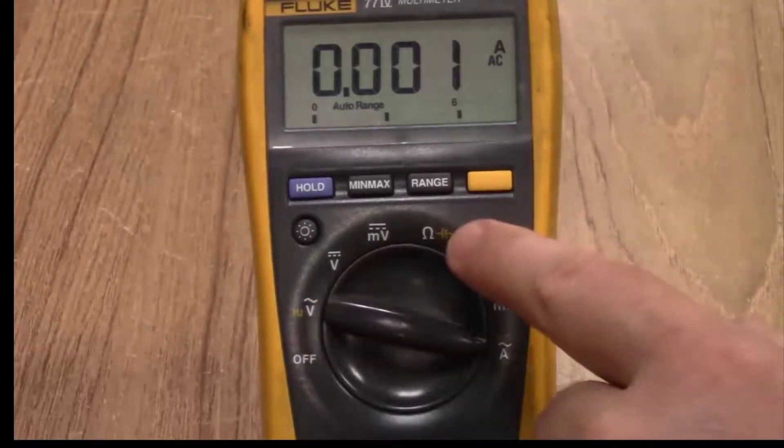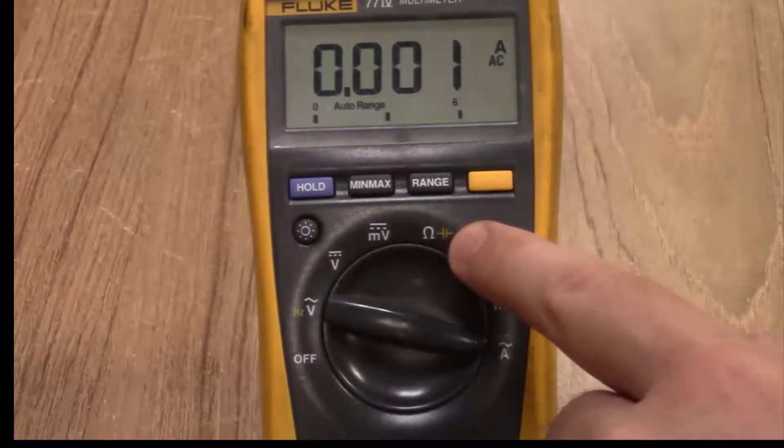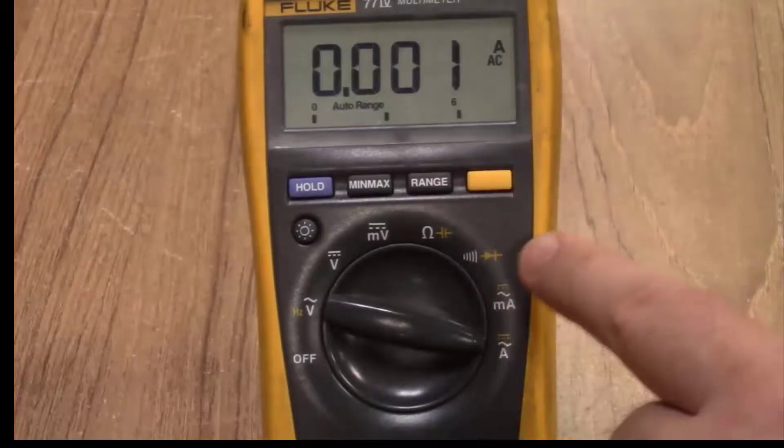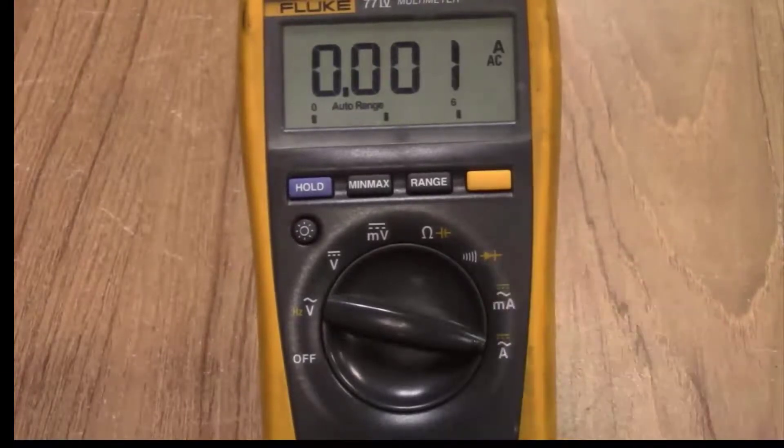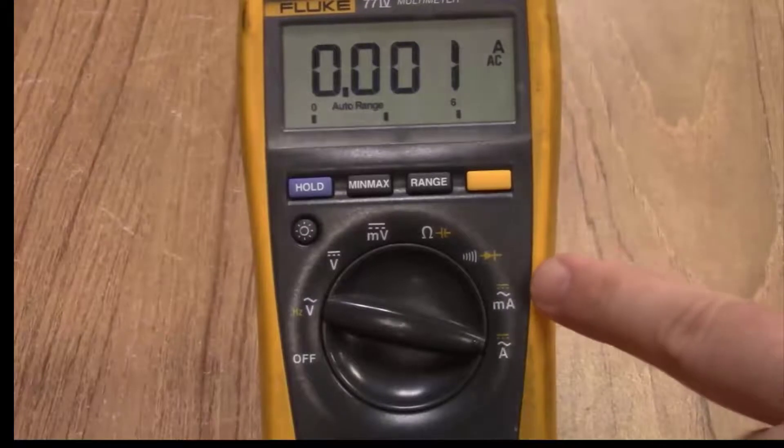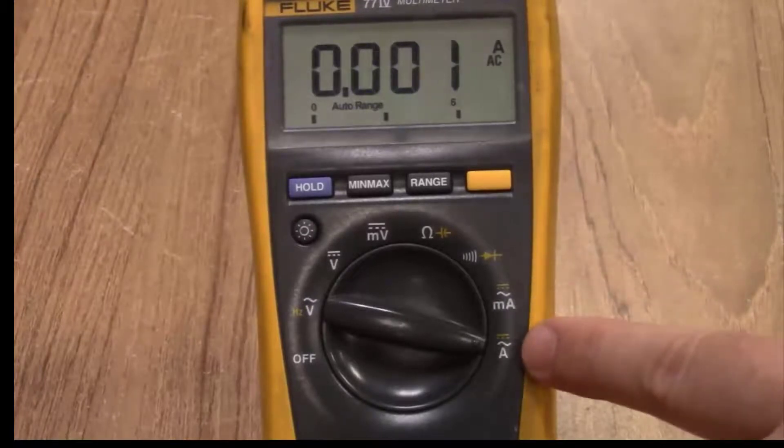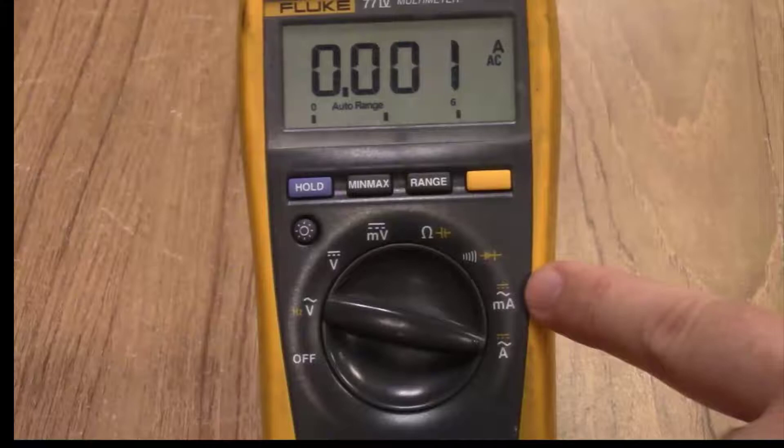On that selection you can go between resistance and measuring a capacitor in this setting. You can go between continuity and measuring a diode on that setting. And again, AC to DC measurement changes by using the yellow button on those.